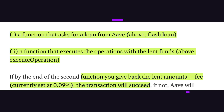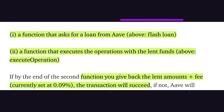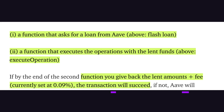For a flash loan to work, it has to follow a specific blueprint. You need a function that asks for a loan from Aave, a function that executes the operation with the lent funds — for example an arbitrage trade — and then at the end of the transaction, a function to give back the lent amount plus the fee, which is currently 0.09 percent.